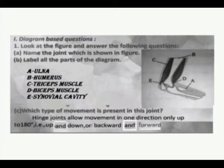Answers for labeling: A. Ulna. B. Humerus. C. Tricep muscle. D. Bicep muscle. E. Synovial cavity.